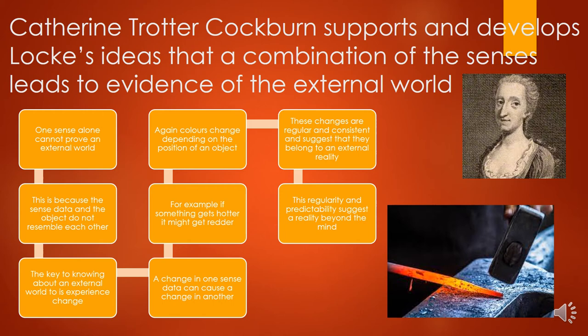The key to knowing about an external world, Cockburn says, is to experience change in objects. A change in one sense datum can cause a change in another, and if these two things correspond, then we've got much more likelihood of these things existing. For example, if something gets hotter it might get redder — that's certainly the case with metal. And colours and our perception of colours change depending on the position of an object. So if we change the position, we change the colour.